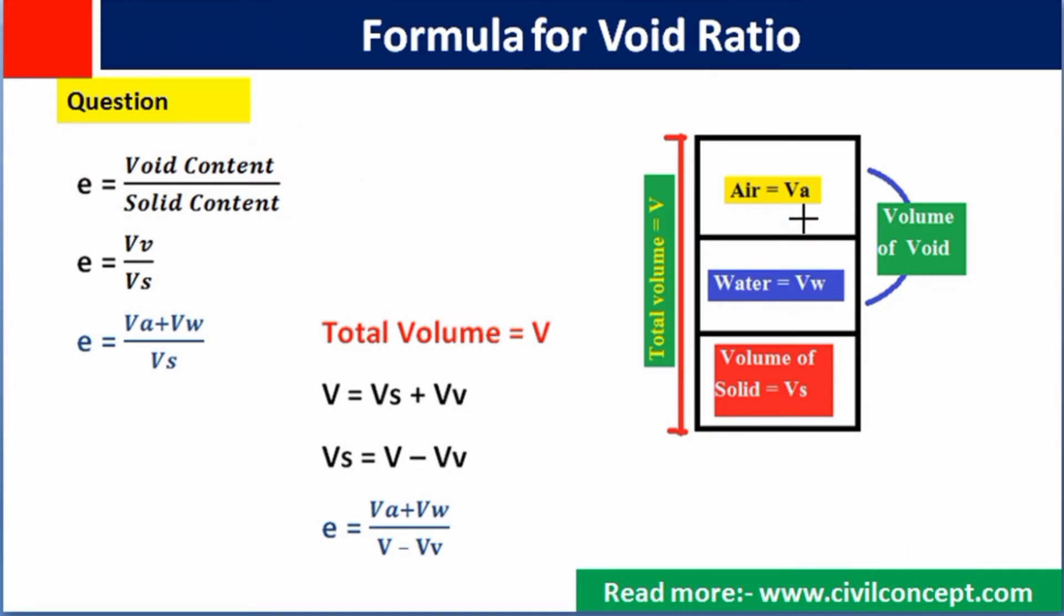When we add air and water, then we will get what? Volume of void. Now, when we divide both of this volume by solid content, then we will get what? Void ratio.